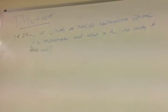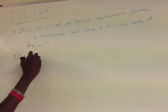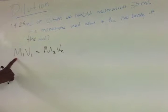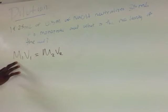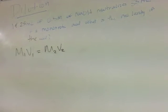Since we're dealing with dilution, you always use the equation M1V1 equals M2V2. M1 is the molarity of the first solution, V1 is the volume, M2 is the molarity of the second solution, and V2 is the volume of the second one.